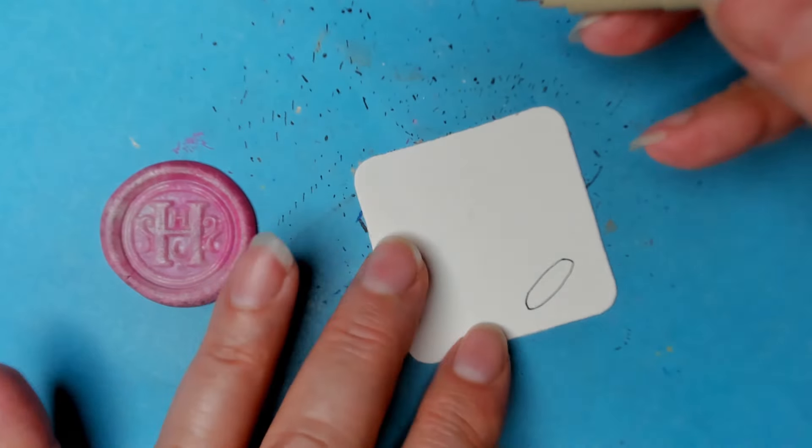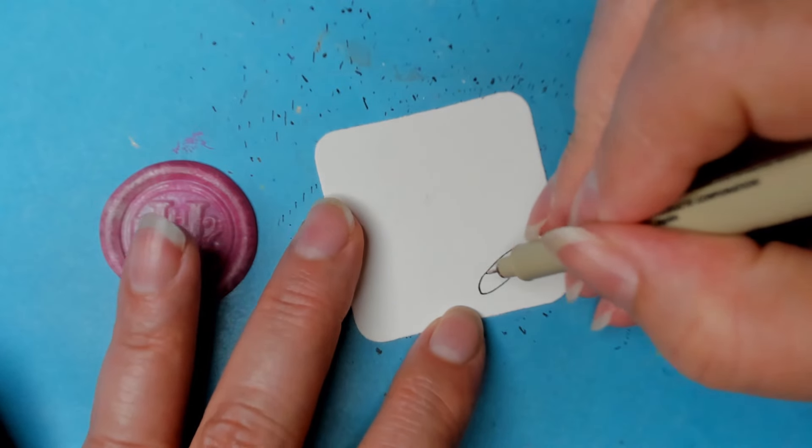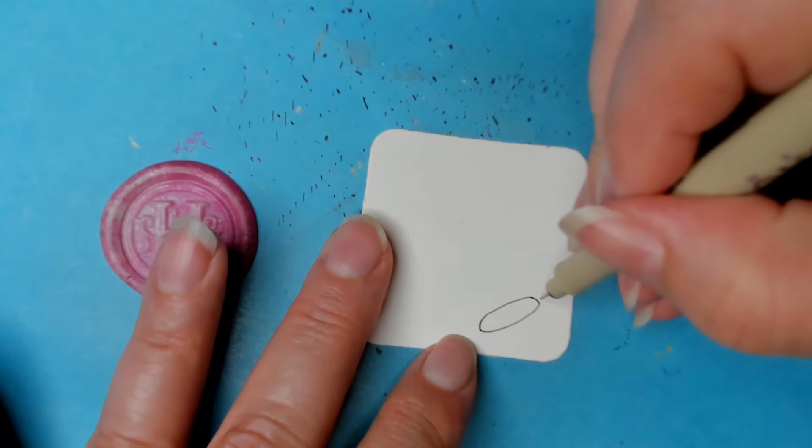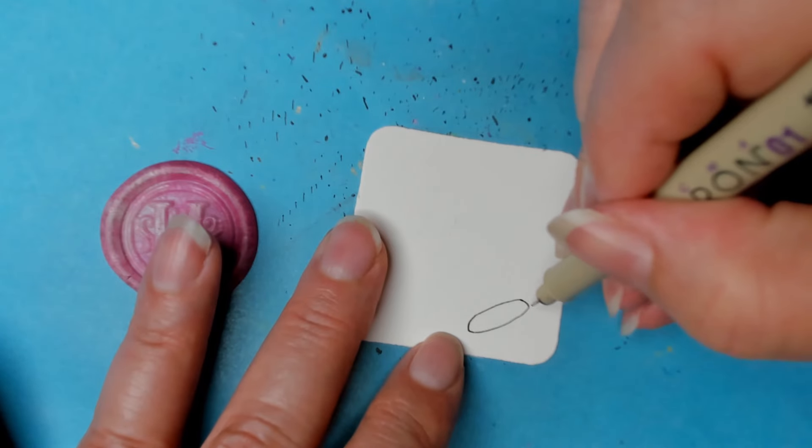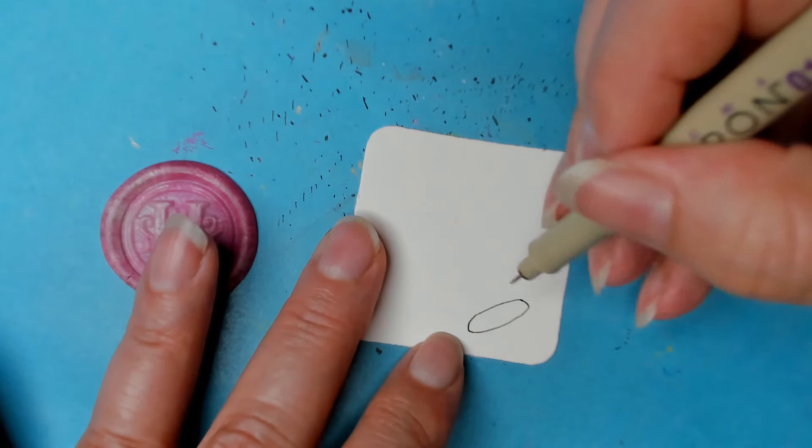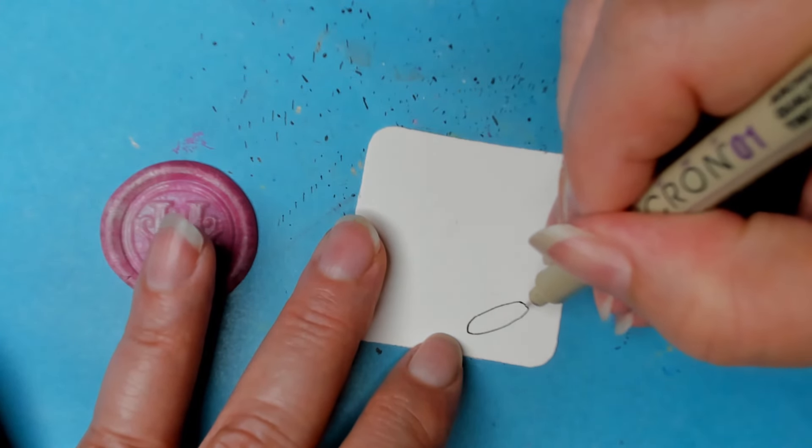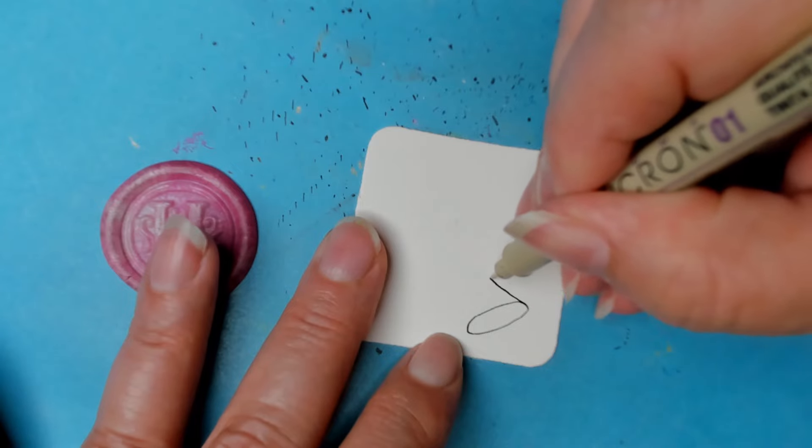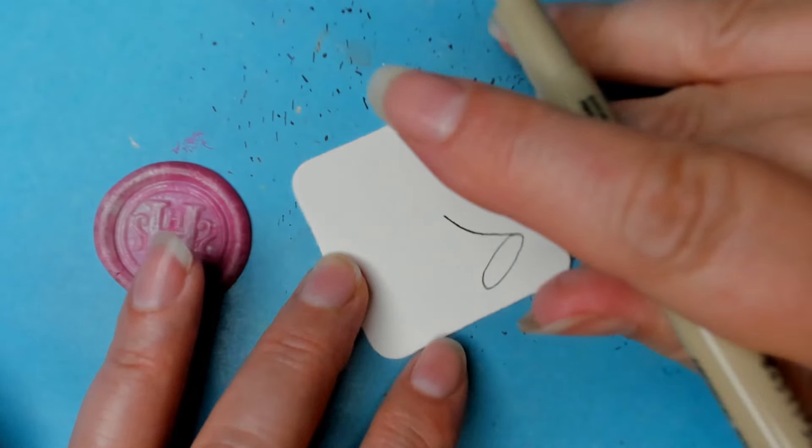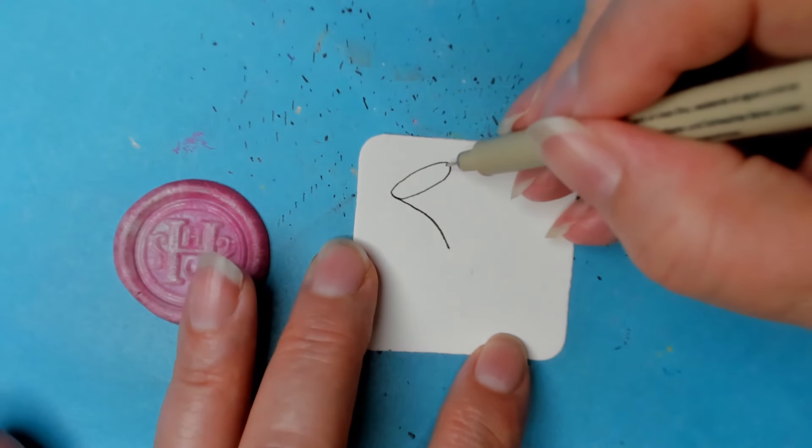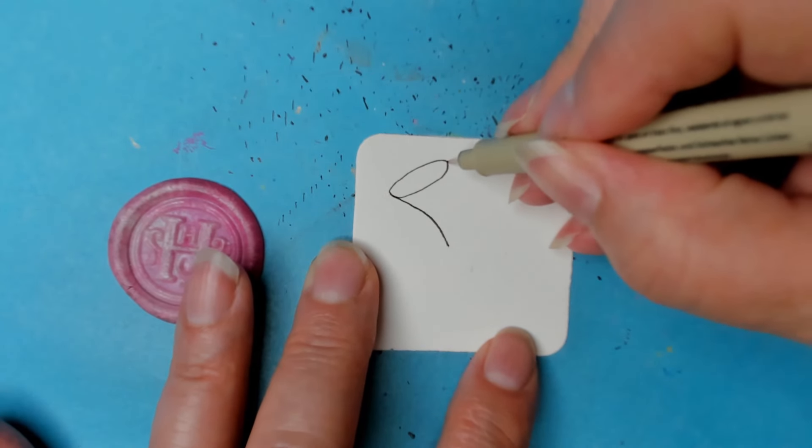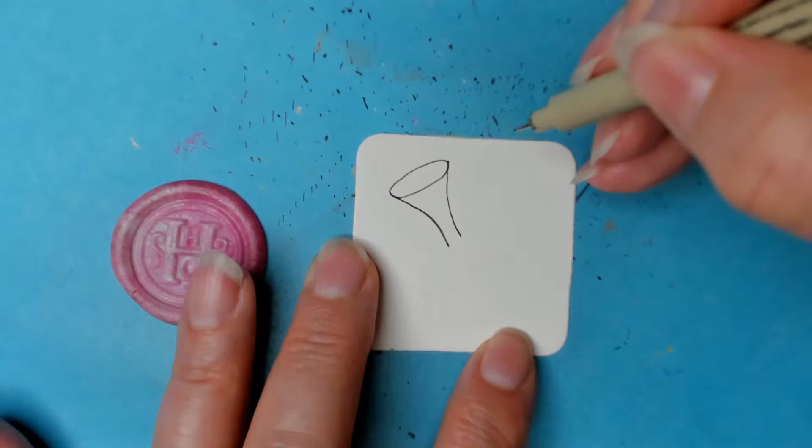And then from here, we're gonna do a couple curved lines. This one I'm gonna use the curve of my hand. So coming from the edge, a little bit of a takeoff and land concept. As far up as you want, and then you can turn the tile so that way you can use that natural curve.